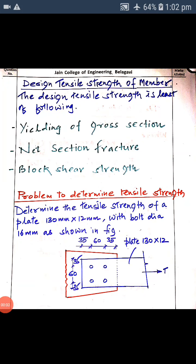Welcome back students. In the last class we discussed the introduction to tension members, the types of tension members, and how failure takes place in tension members. There are different design parameters according to IS 800-2007. Today we will solve a small problem to determine the design tension — that is, how much tensile strength a member can develop.